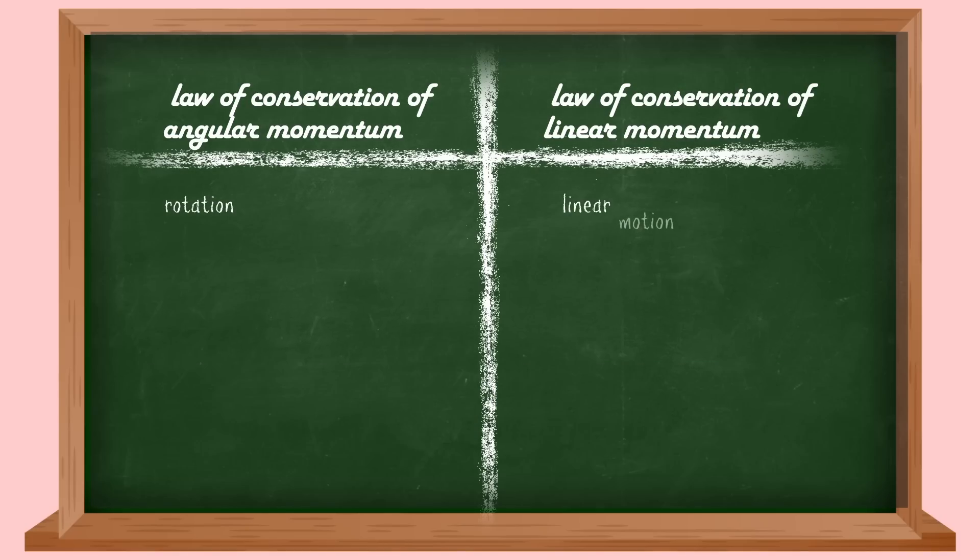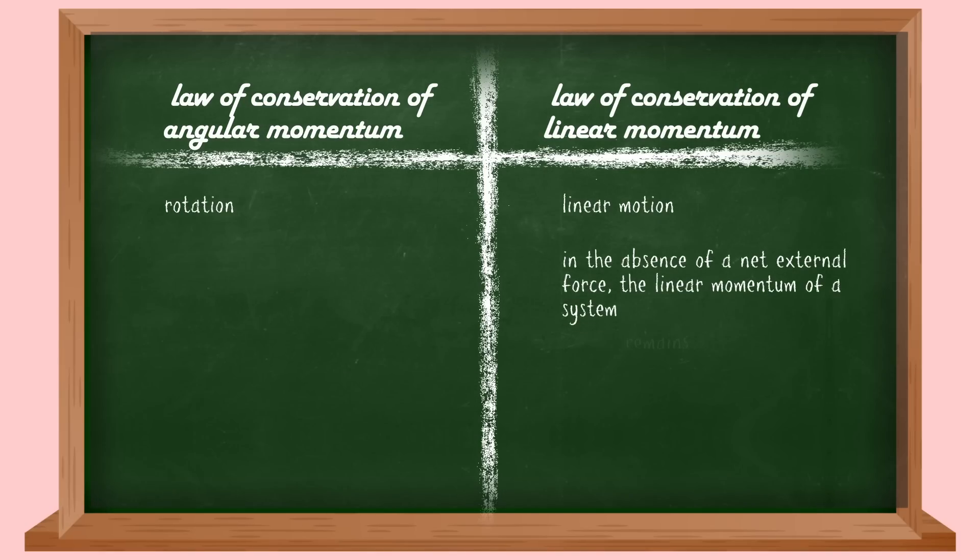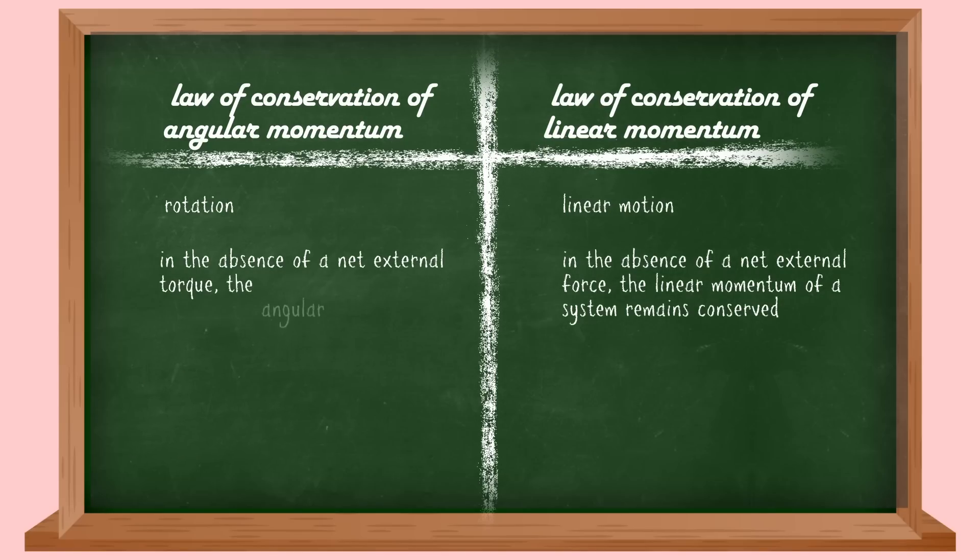This says that in the absence of a net external force, the linear momentum of a system remains conserved. And this says that in the absence of a net external torque, the angular momentum of a system remains conserved. And a torque is nothing but a spinning force, or a force that causes a spin.